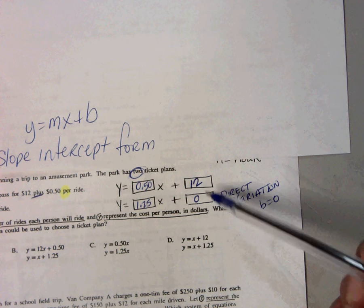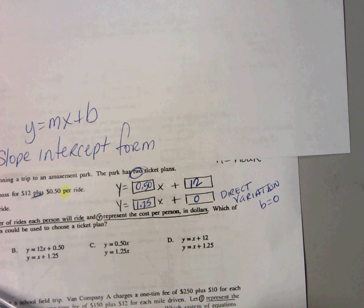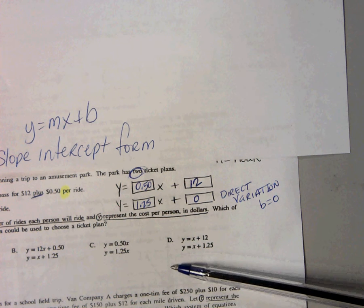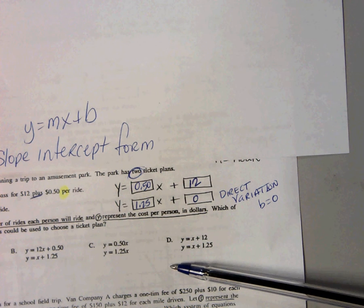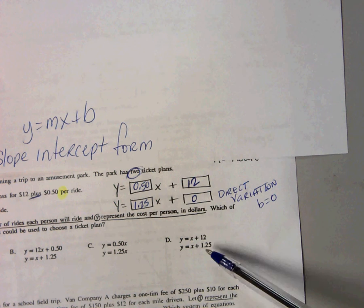Now that I have my two equations, I find which answer choice shows the correct system. In this problem, it's not asking for what each ride, how many rides there would be. It's not asking the total cost of anything. It just wants you to set it up.